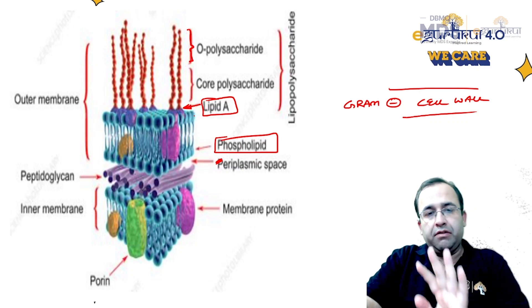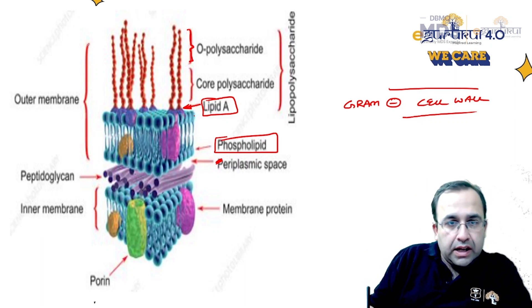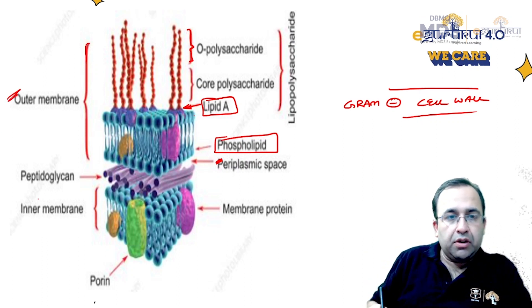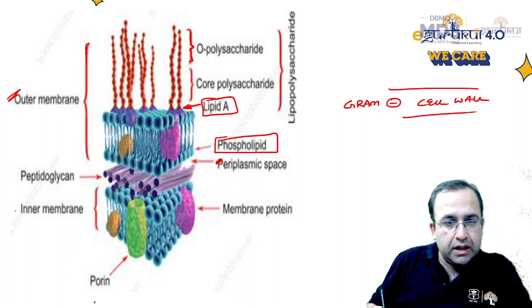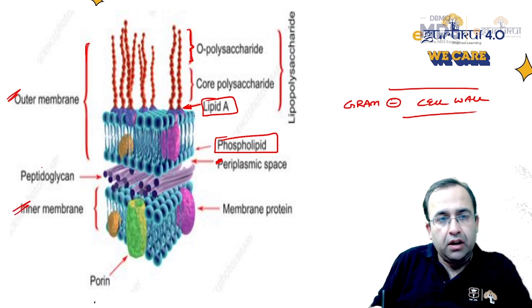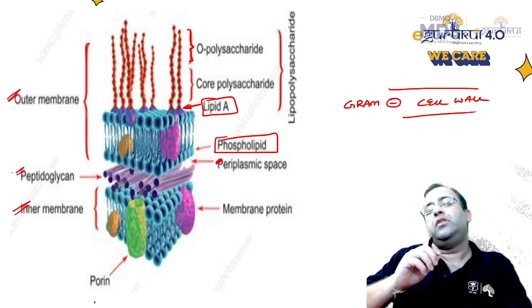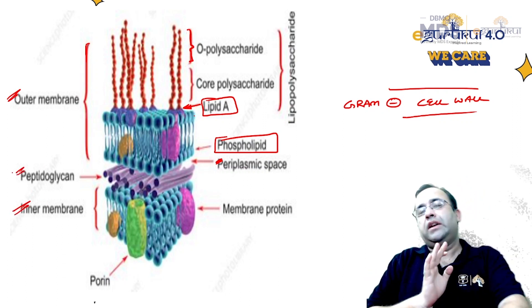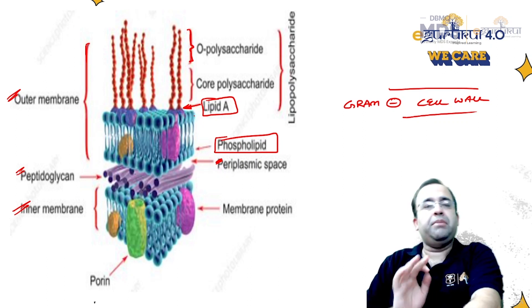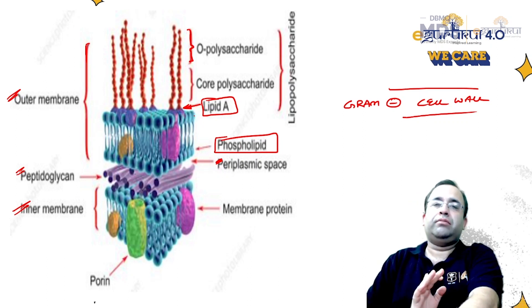This is the gram-negative cell wall. The outer side is the outer membrane, the inner is the inner membrane, and the space between the two contains peptidoglycans.